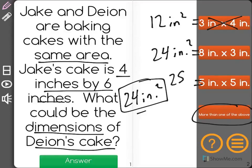However, when we multiply 5 times 5, we see that we get 25 inches squared, which isn't 24, leaving us with the correct answer of 8 inches by 3 inches.